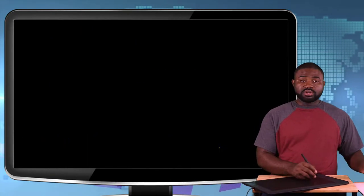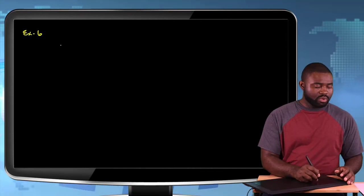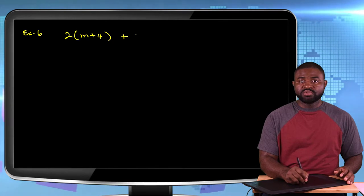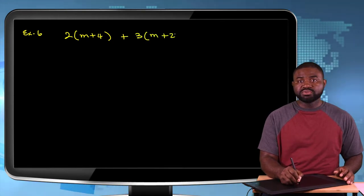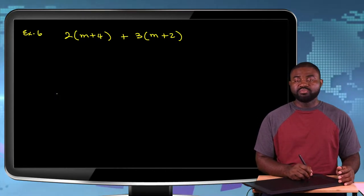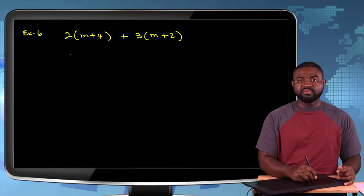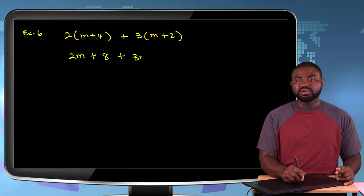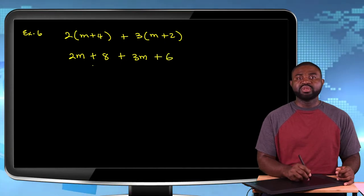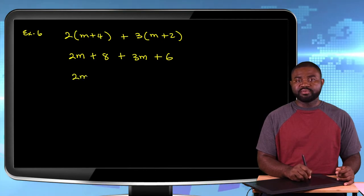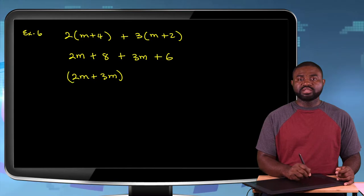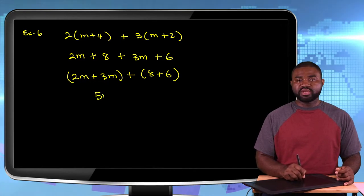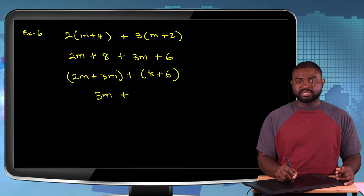Let's keep going — another example. We have 2 bracket m plus 4, plus 3 bracket m plus 2. We remove the brackets through expansion. So 2 multiplied by m gives 2m, plus 2 multiplied by 4 is 8, plus 3 multiplied by m is 3m, plus 3 multiplied by 2 is 6. Grouping like terms: 2m plus 3m is 5m, and 8 plus 6 is 14. So the simplified answer is 5m plus 14.